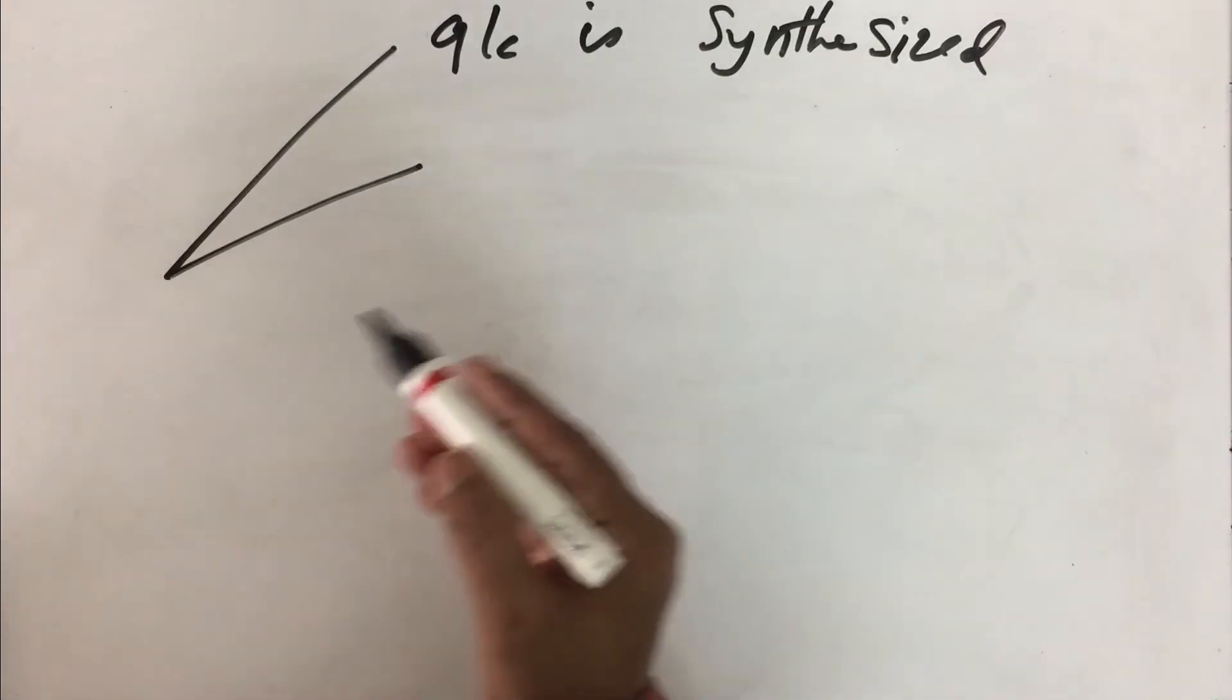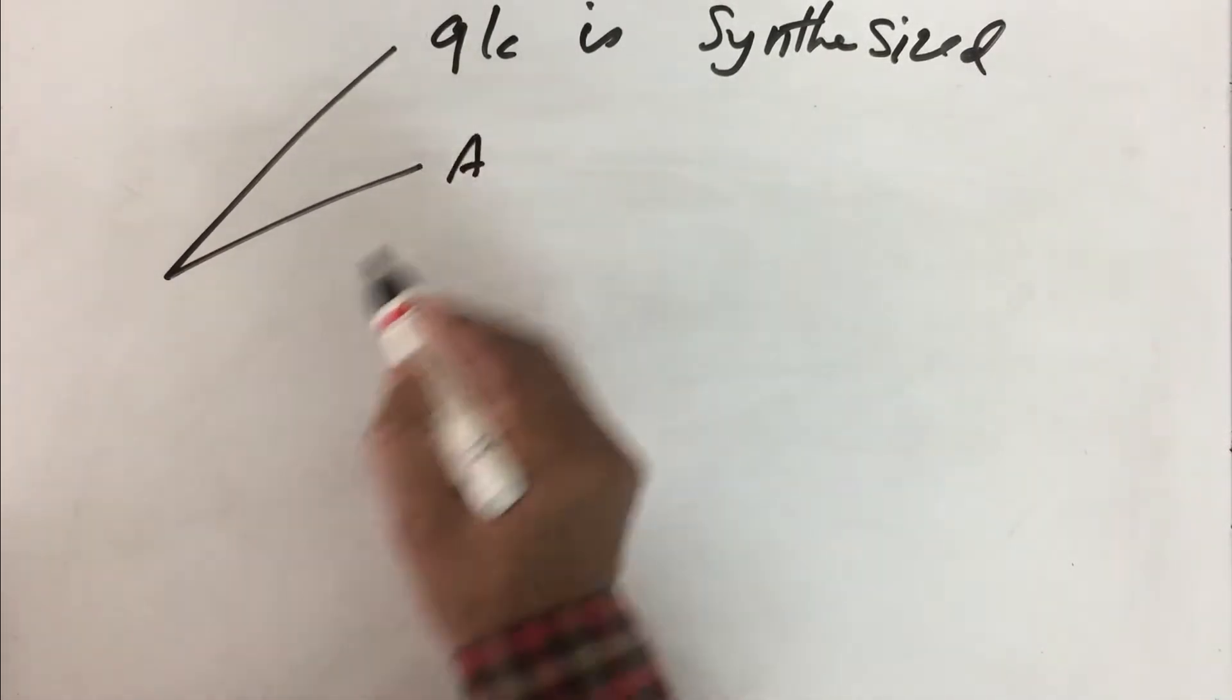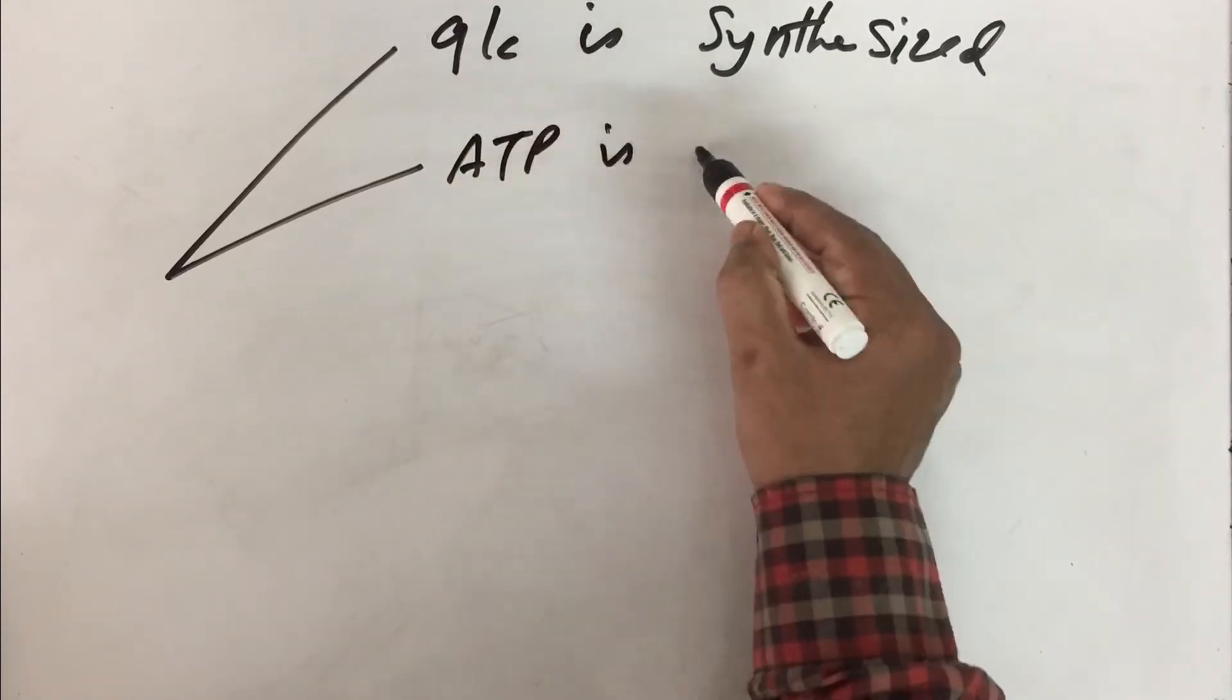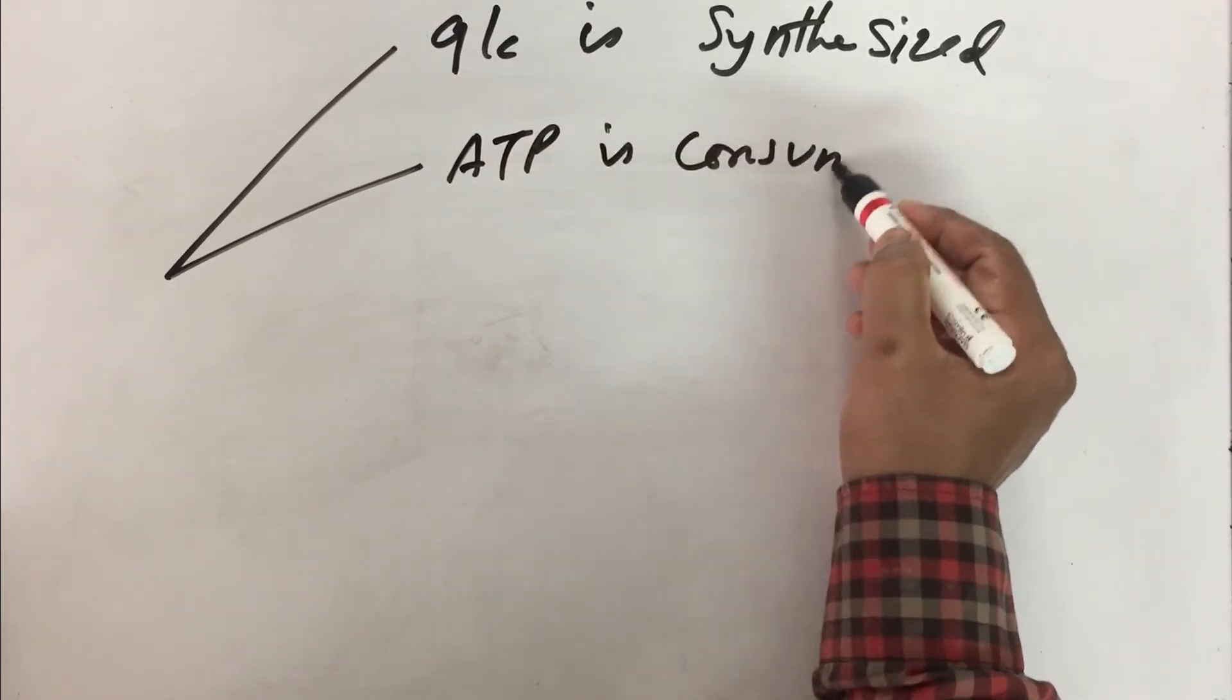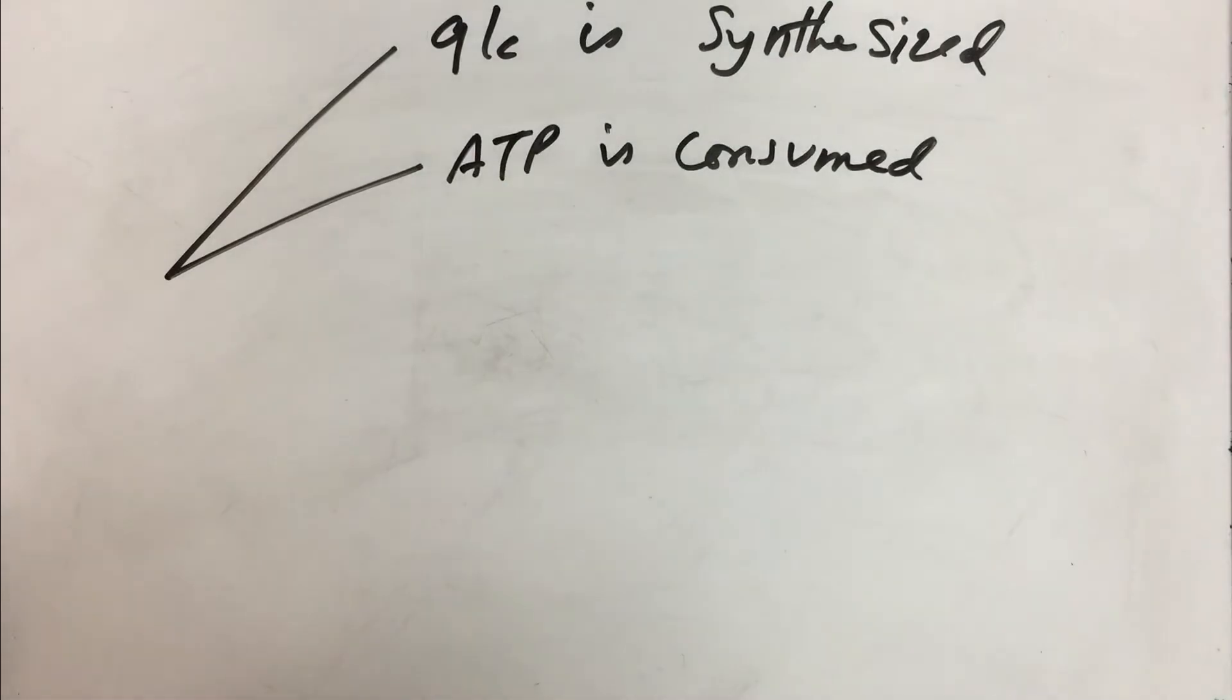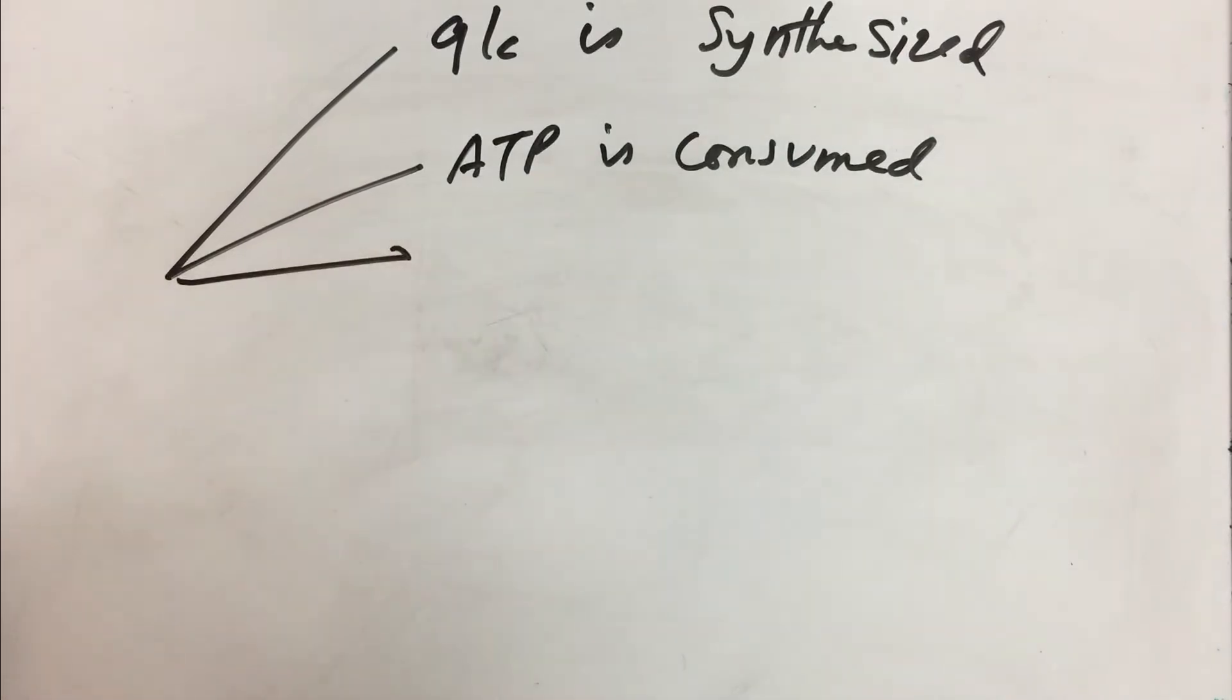Second argument that can be given is in gluconeogenesis ATP is consumed. Whereas in glycolysis we synthesized ATP and here we will be consuming almost 6 ATP equivalents in order to produce glucose. Therefore ATP is consumed.